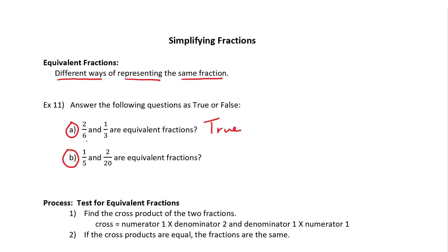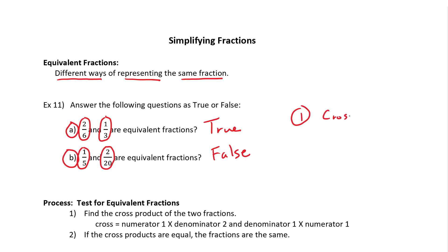The first one is true: 2 over 6 and 1 over 3 represent the same value — they are equivalent fractions. B is false: 1 over 5 and 2 over 20 are not equivalent fractions, meaning they do not represent the same value. There are two mathematical methods to prove whether a fraction is equivalent or not. The first method is called the cross product. The second method is to simply simplify each of the fractions.